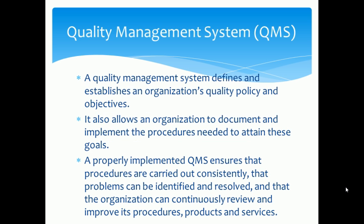Now, what is a Quality Management System? A Quality Management System defines and establishes an organization's quality policy and objectives. It also allows an organization to document and implement the procedures needed to attain these goals. A properly implemented QMS ensures that procedures are carried out consistently, that problems can be identified and resolved, and that the organization can continuously review and improve its procedures, products and services.